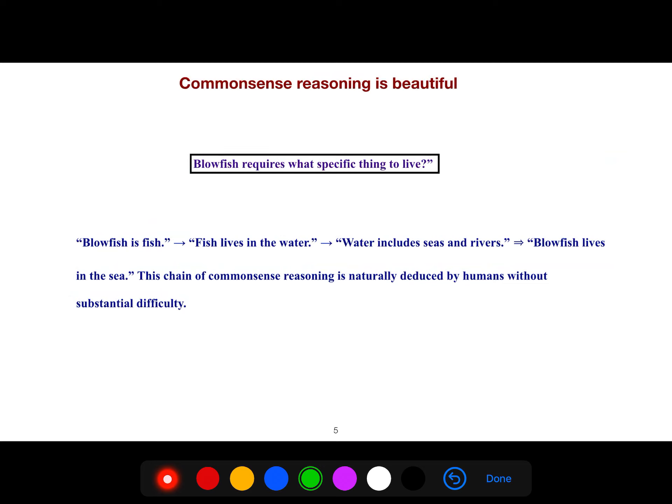Commonsense reasoning is beautiful. For example, blowfish requires what specific thing to live? We first should know that fish lives in the water, and then water includes seas and rivers, and then we understand that blowfish lives in the sea. So this chain of commonsense reasoning is naturally deduced by humans without substantial difficulty.